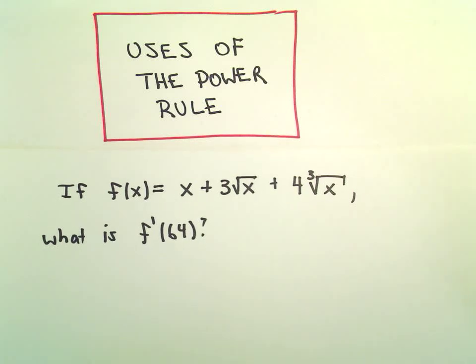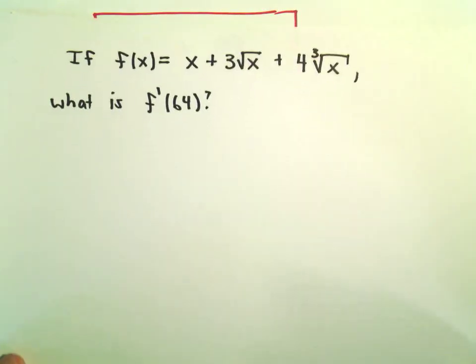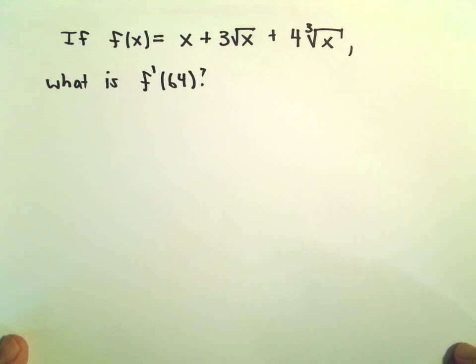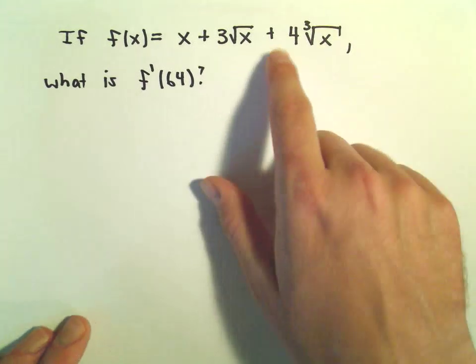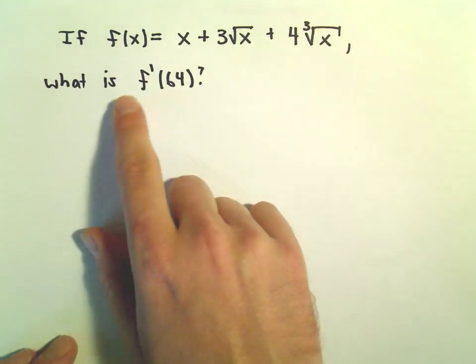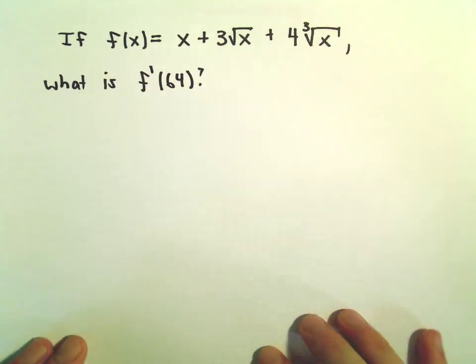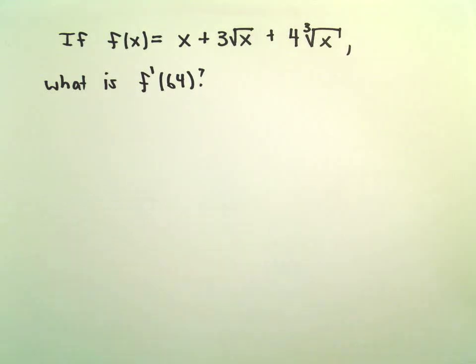Here we have f of x equals x plus 3 times the square root of x plus 4 times the cube root of x, and we want to figure out the value for f prime of 64.